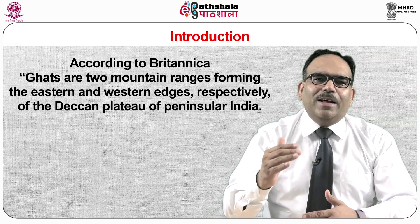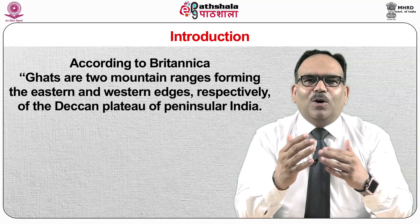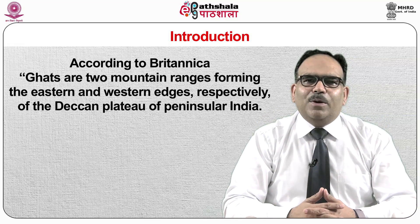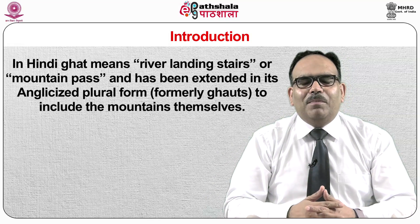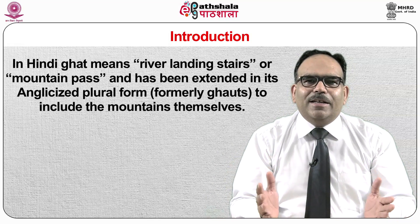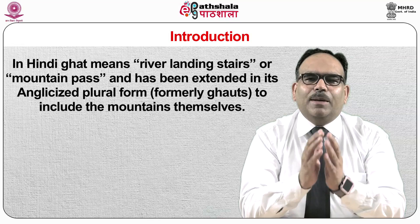According to Britannica, ghats are two mountain ranges forming the eastern and western edges respectively of the Deccan Plateau of Peninsular India. The two ranges run roughly parallel to the Bay of Bengal and Arabian Sea coasts respectively, from which they are separated by strips of fairly level coastal land. In Hindi, 'Ghat' means river landing stairs or mountain pass, and has been extended in its anglicized plural form to include the mountains themselves.